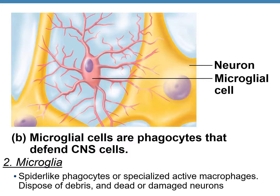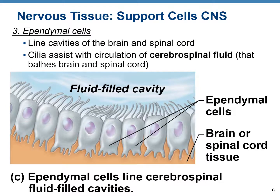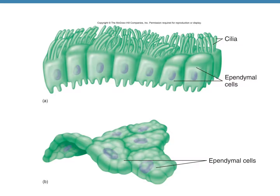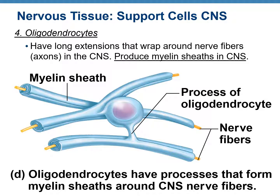The second type of neuroglia in the CNS are the microglia, which are specialized macrophages — immune cells that act as soldiers, eating up dead or damaged neurons and disposing of debris. They look like small spiders. The third type are ependymal cells, which are ciliated cells that line the cavities inside the brain and spinal cord. These cavities contain cerebrospinal fluid, and the cilia help with the circulation of this fluid. The fourth and last type are oligodendrocytes, which produce a special protective covering called the myelin sheath, which wraps around nerve fibers or axons.